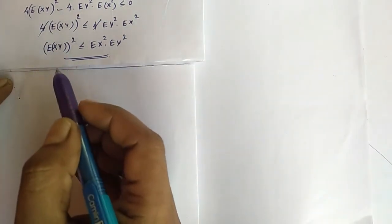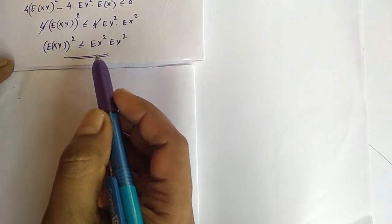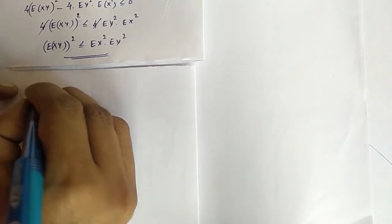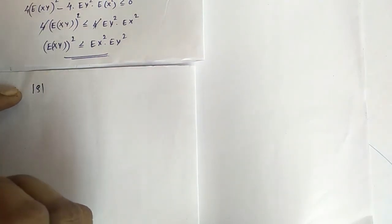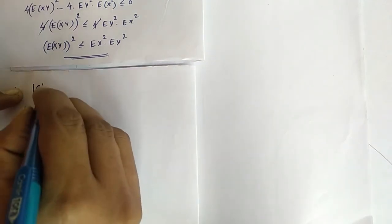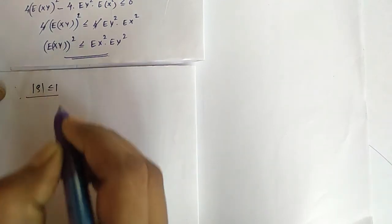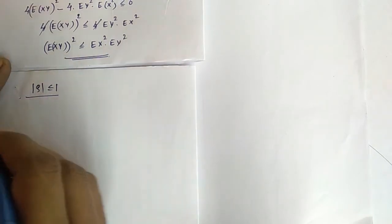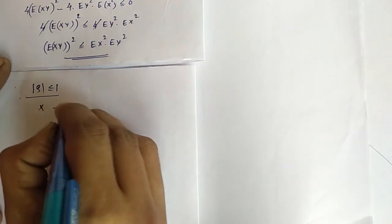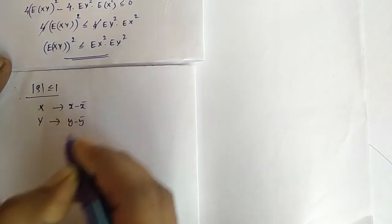Now applying this Cauchy-Schwarz inequality, we can obtain some important results. The first one is the correlation coefficient between x and y. The correlation coefficient is denoted by rho, which is always less than or equal to 1. This result can be obtained from Cauchy-Schwarz inequality. We are going to replace x by x minus x-bar and y by y minus y-bar.